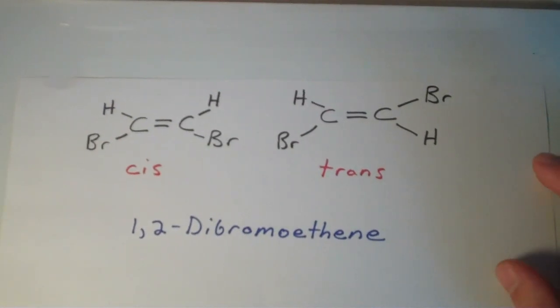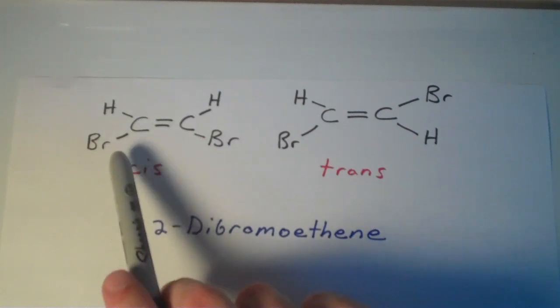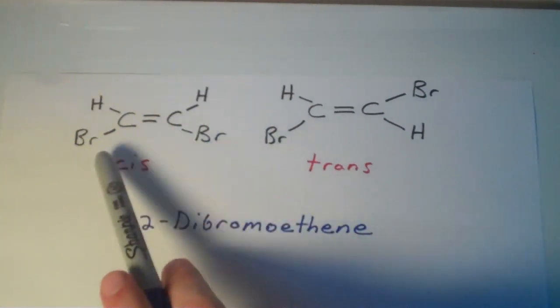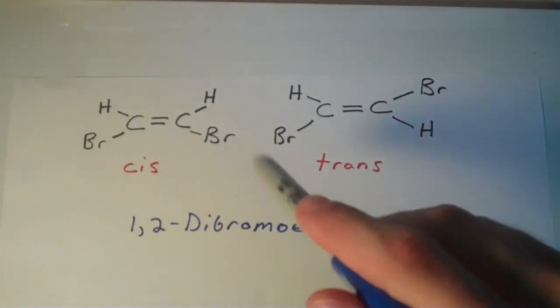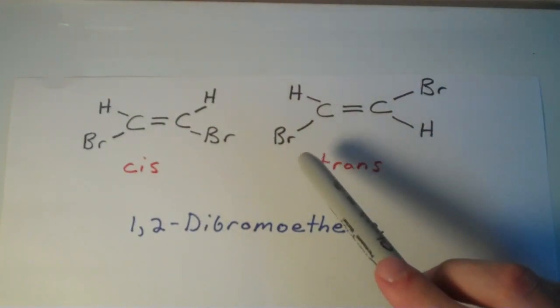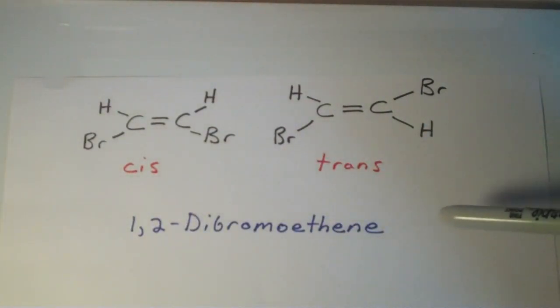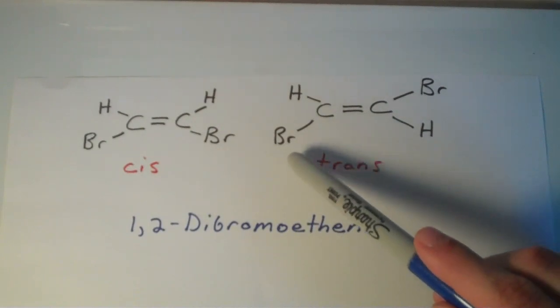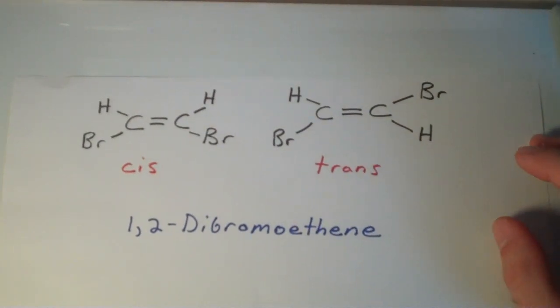1,2-dibromoethene can exist as two forms. The cis form, in which the bromine atoms are on the same side of the double bond. Or the trans form, in which the bromines, the cis isomer or the trans isomer, in which the bromine atoms are on opposite sides of that double bond. So that pi bond, remember...